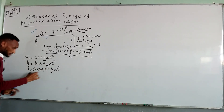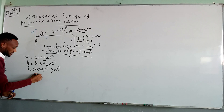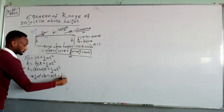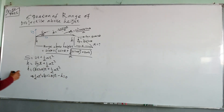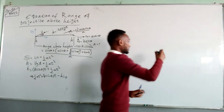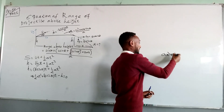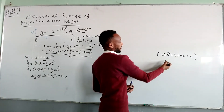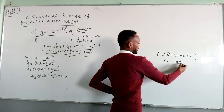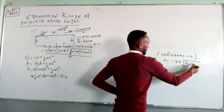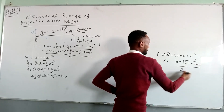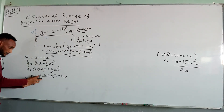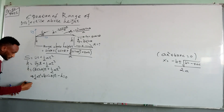Then h equals u sin θ times t plus half of a times t². We rearrange this equation into the form: (1/2)a·t² + u sin θ·t − h = 0. We recognize this as a quadratic equation in t of the form ax² + bx + c = 0. To solve for x, we use: x = (−b ± √(b² − 4ac)) / 2a.